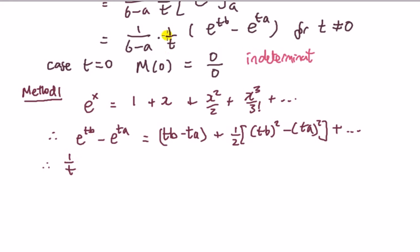Therefore, one over t, I'm looking at this bit here, is going to be e, oops, tb minus e to ta, divide the whole thing by t. You can see here straight away that goes to the b over a, because there's a common factor of t that comes out. Likewise,